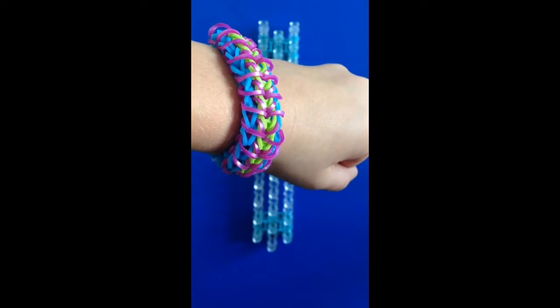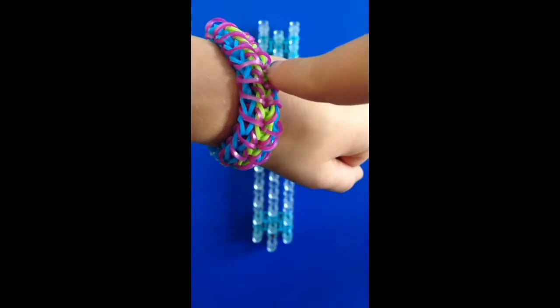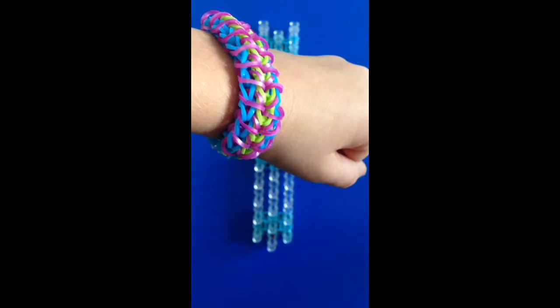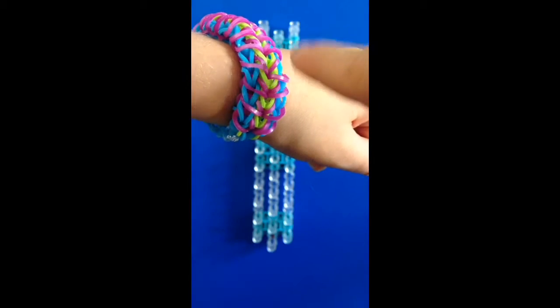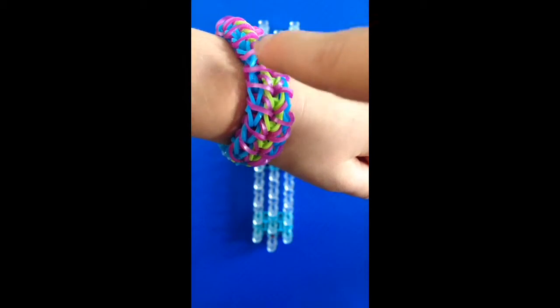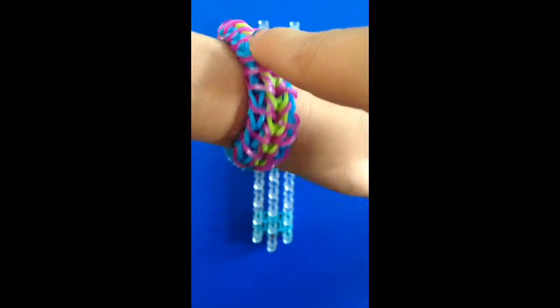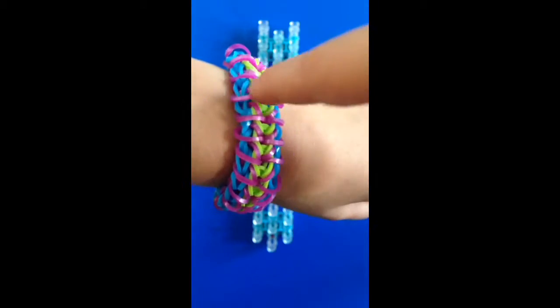Since Valentine's is coming up, I thought I would do Valentine's colors for my bracelet. So I'll be using white for the border, red for these little raindrops right here on the side, and for my middle row I'll be using pink.